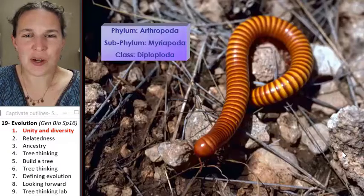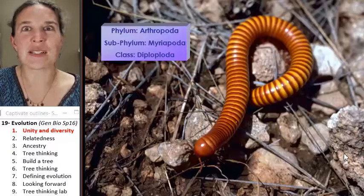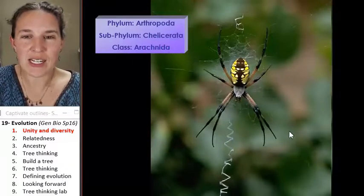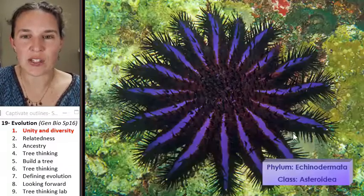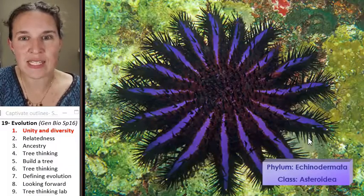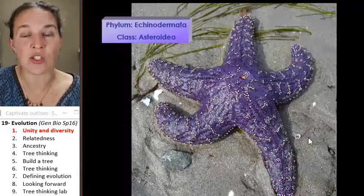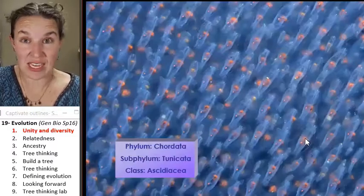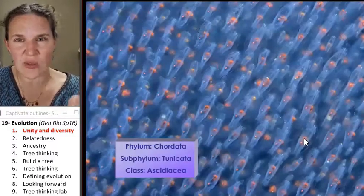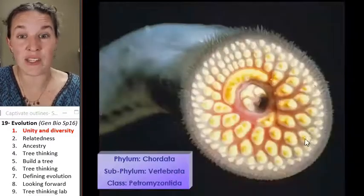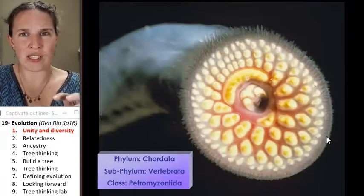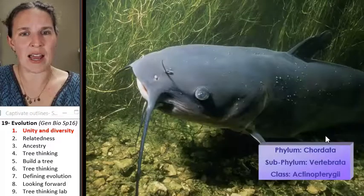You've got some crabs, you've got some millipedes — look at the different kinds of critters, and all of these things are animals. We're going to learn about the characteristics that all of these guys have in common that make them actually qualified as animals.